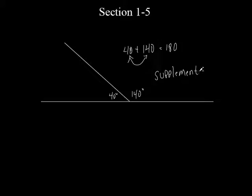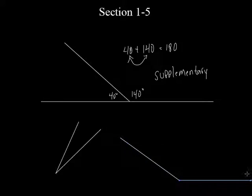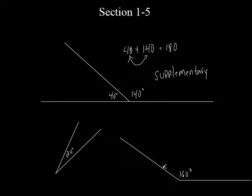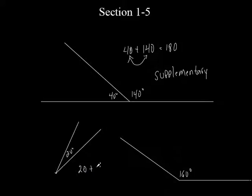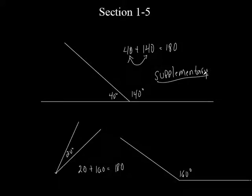Now they don't have to be right next to each other. They don't have to be adjacent. They don't have to be a linear pair. We'll say that's 20 degrees, and this would be 160 degrees. They're not adjacent angles, are they? They don't form one straight line. They're two completely separate angles. They don't have a common vertex, they don't have common sides, but they are two angles that happen to add up to 180 degrees. So we still call them supplementary angles.